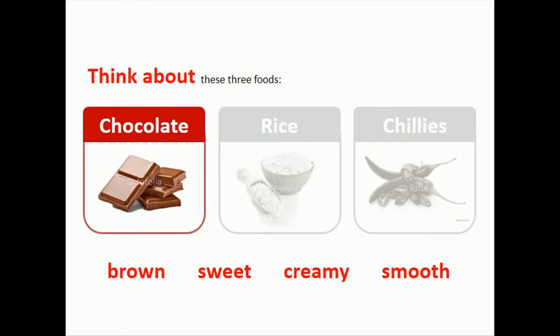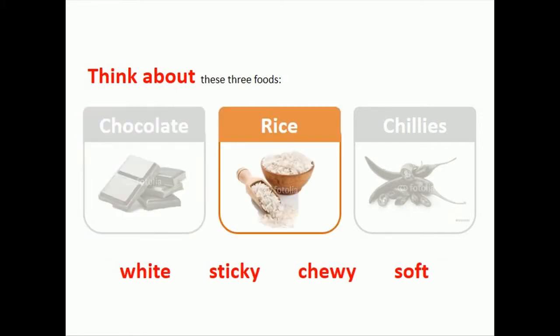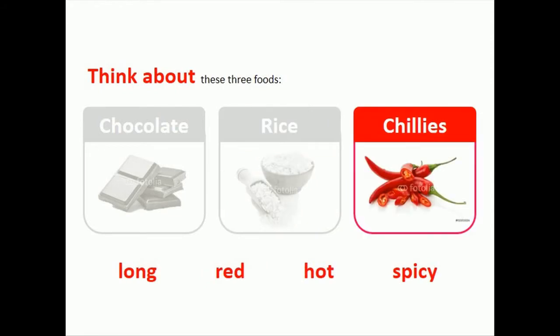This chocolate is brown, sweet, creamy and smooth. This rice is white, sticky, chewy and soft. These chilies are long, red, hot and spicy.